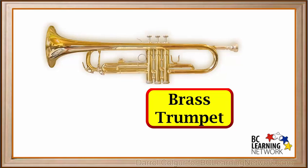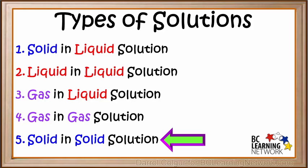We started with solid copper and solid zinc, melted them, mixed them to make brass, and let the brass cool and solidify. So brass and other alloys are examples of solid in solid solutions.